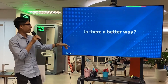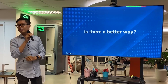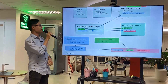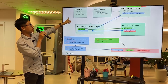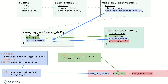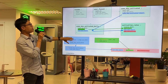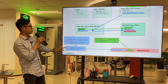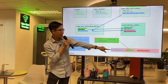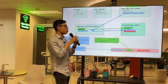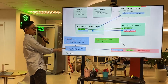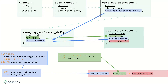Is there a better way? If you look at all the dbt models we created, the key logic comes from just a few highlighted parts: the CASE WHEN, the SUM, and the COUNT. The end result is composed of simple metrics — each one is a simple metric, and you compose them to get the final metric.